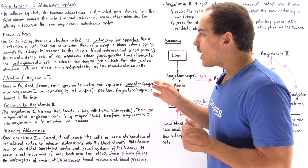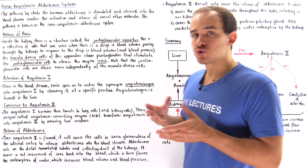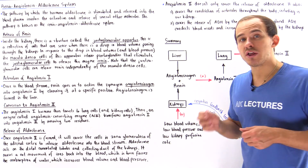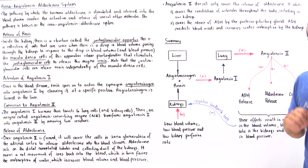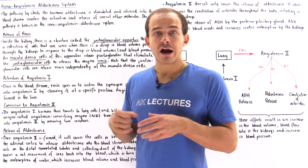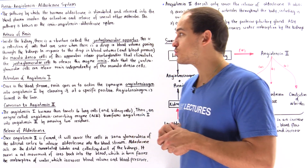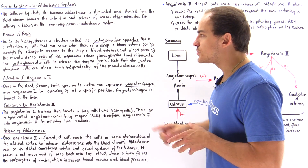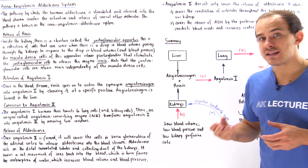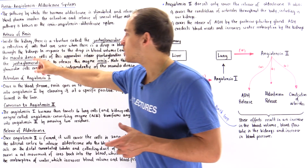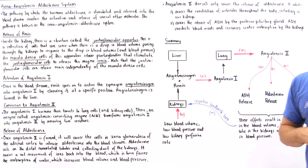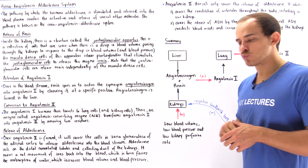When our blood volume drops inside our vessels, when our blood pressure drops, and when the perfusion rate inside our kidneys drops — meaning the rate at which fluid is passing through the kidneys — this causes our macula densa cells to release a prostaglandin that travels to our juxtaglomerular cells, causing those cells to release an enzyme called renin.